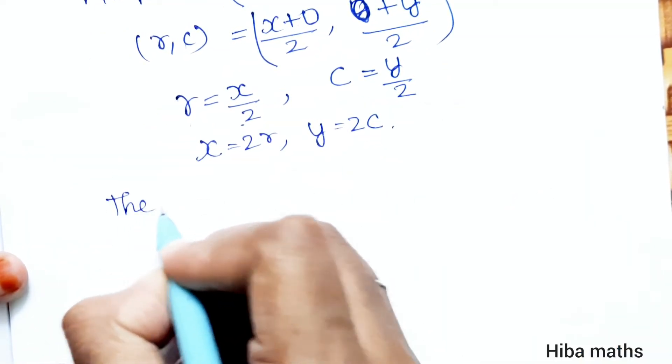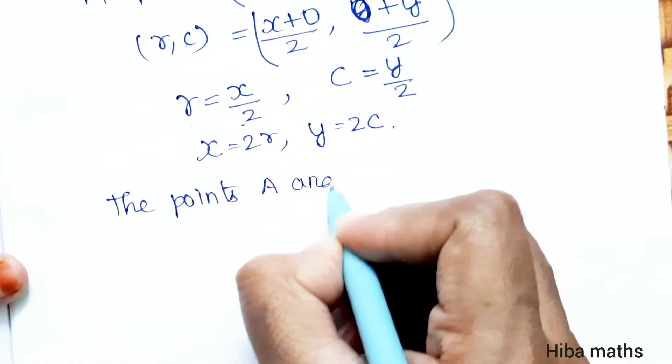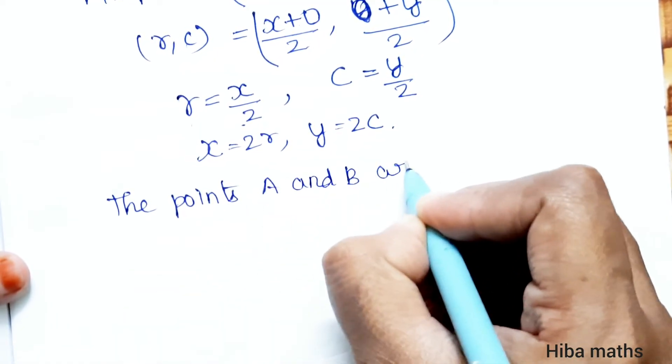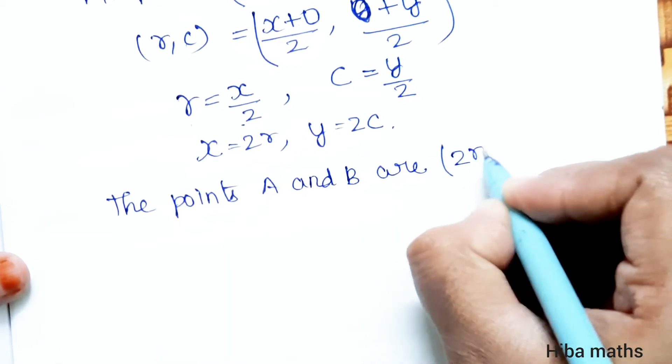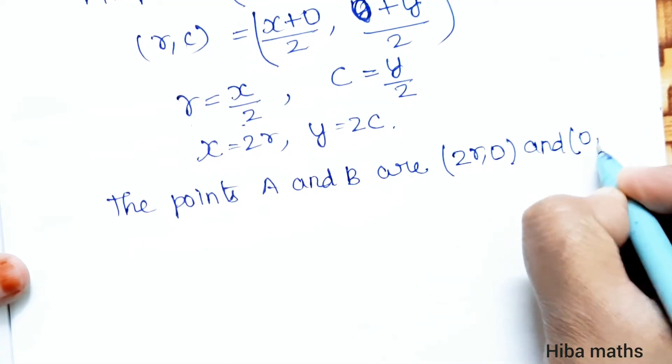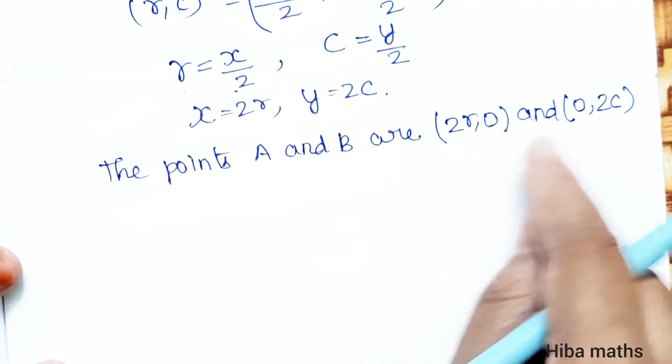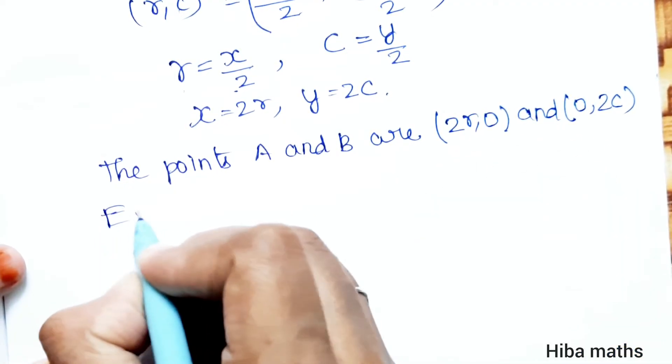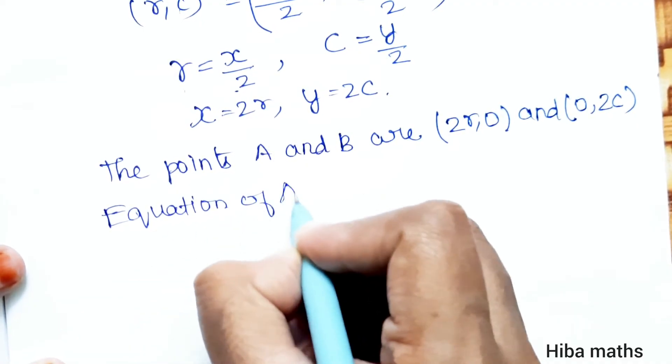The points A and B are: A has coordinates (x,0) which is (2r,0), and B has coordinates (0,y) which is (0,2c). Now we find the equation of AB.